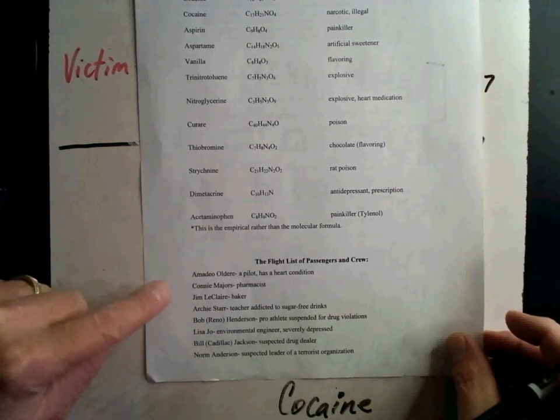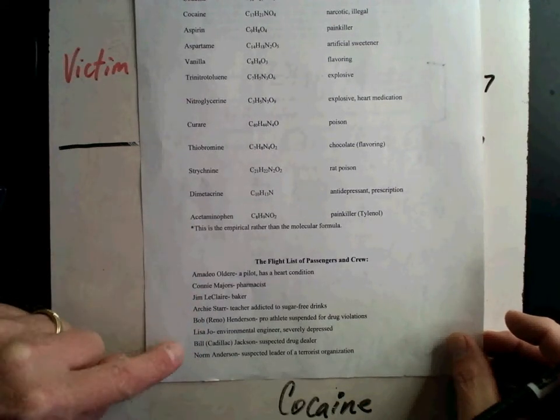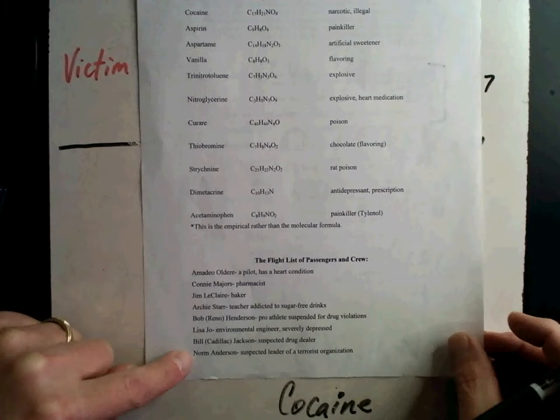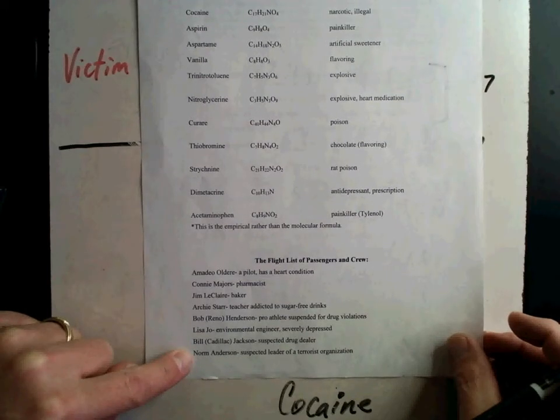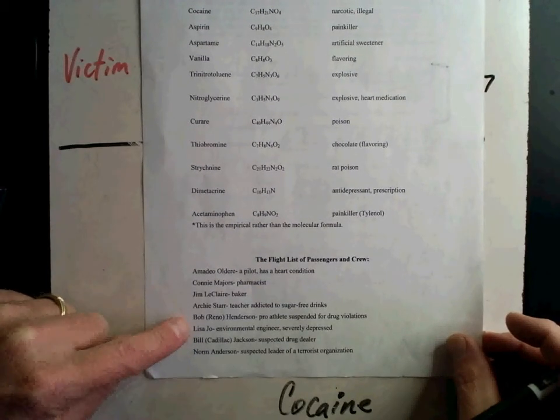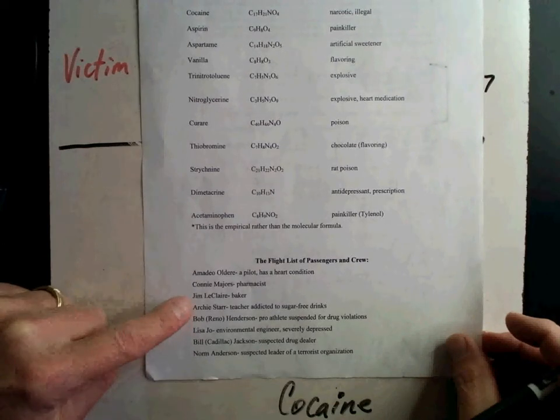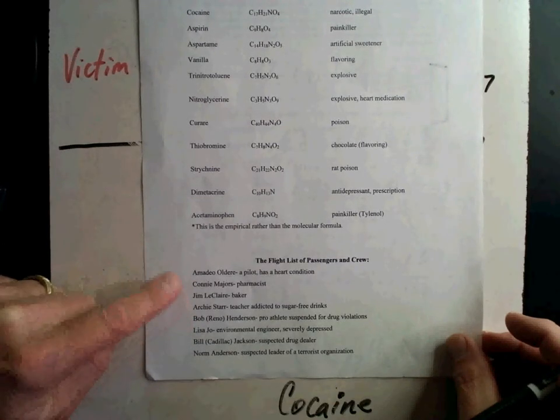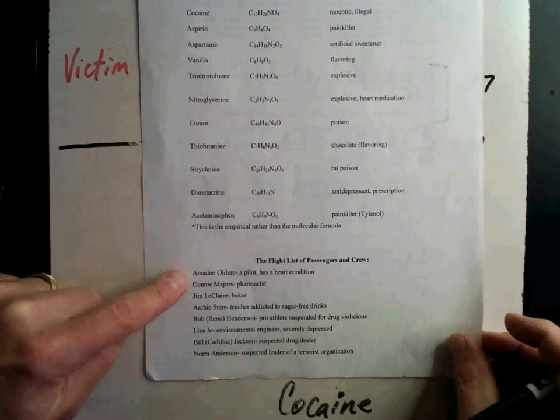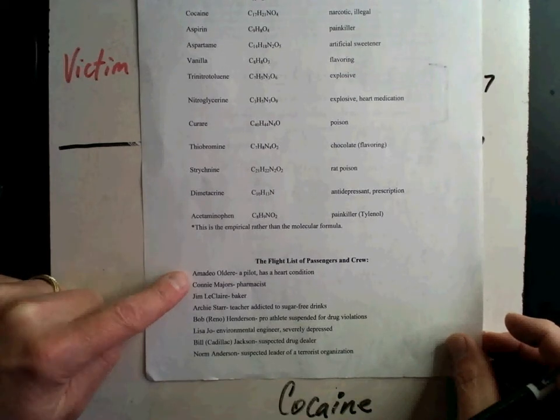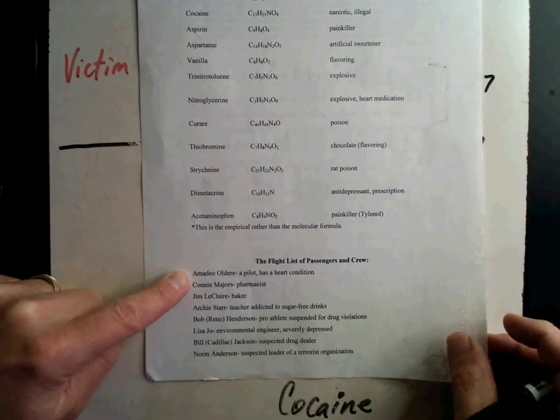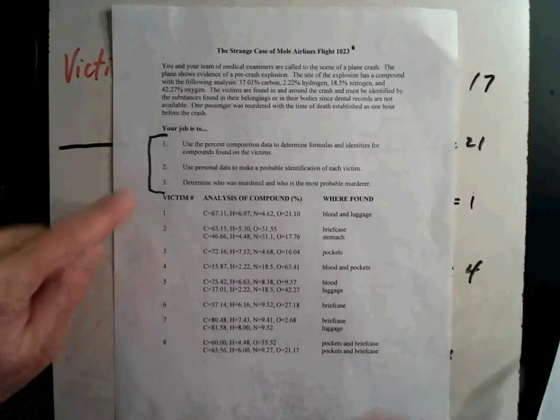And so victim one, you'll figure out eventually it's one of these people. And they give you a little background. Now, this is a wild crew on this plane. You have everything from a suspected leader of a terrorist organization to a drug dealer to an environmental engineer to a pro athlete, a teacher, a baker, a pharmacist, and the pilot. Well, a pilot has a heart condition. That's great. Have a pilot with a heart condition. But you've got to figure out who each person is.